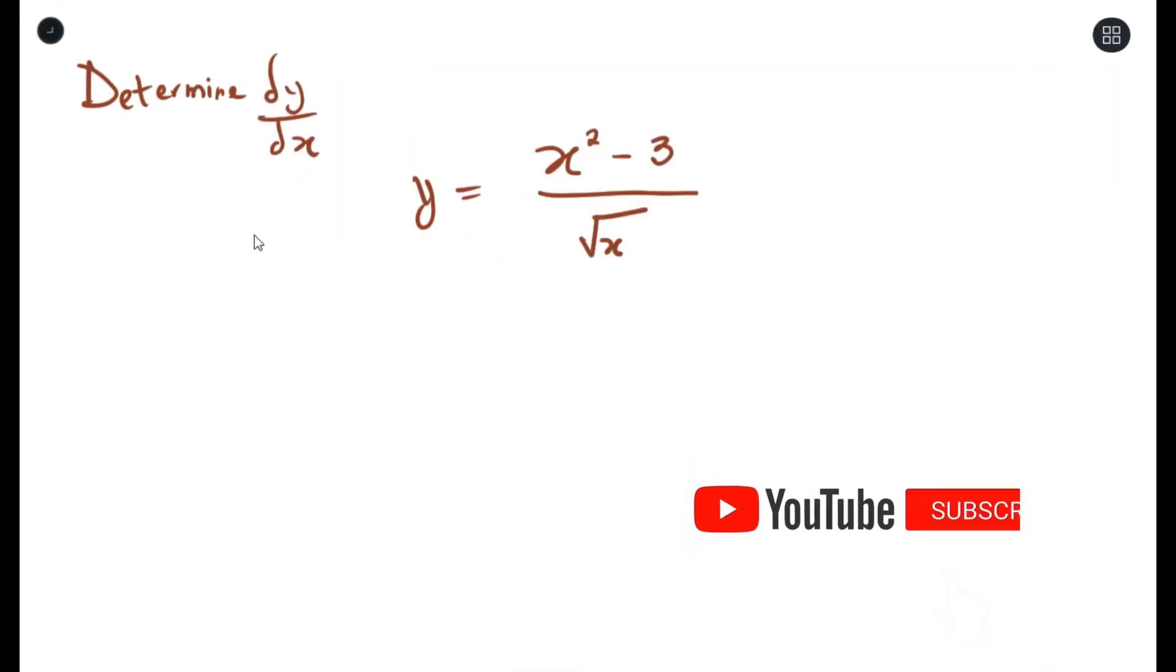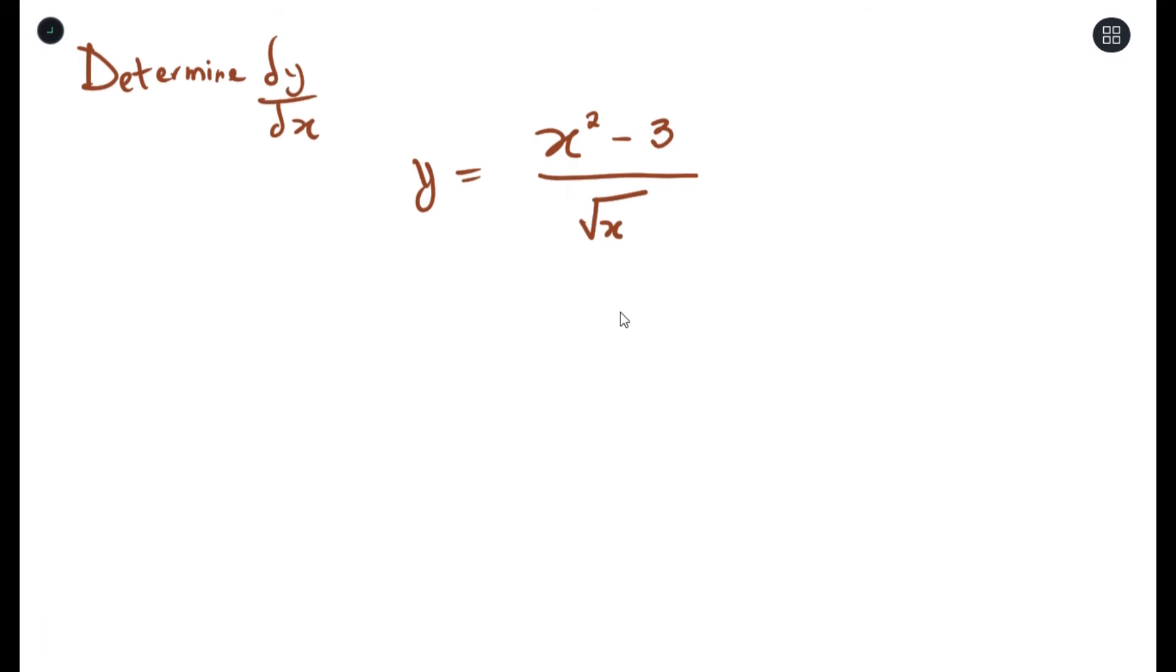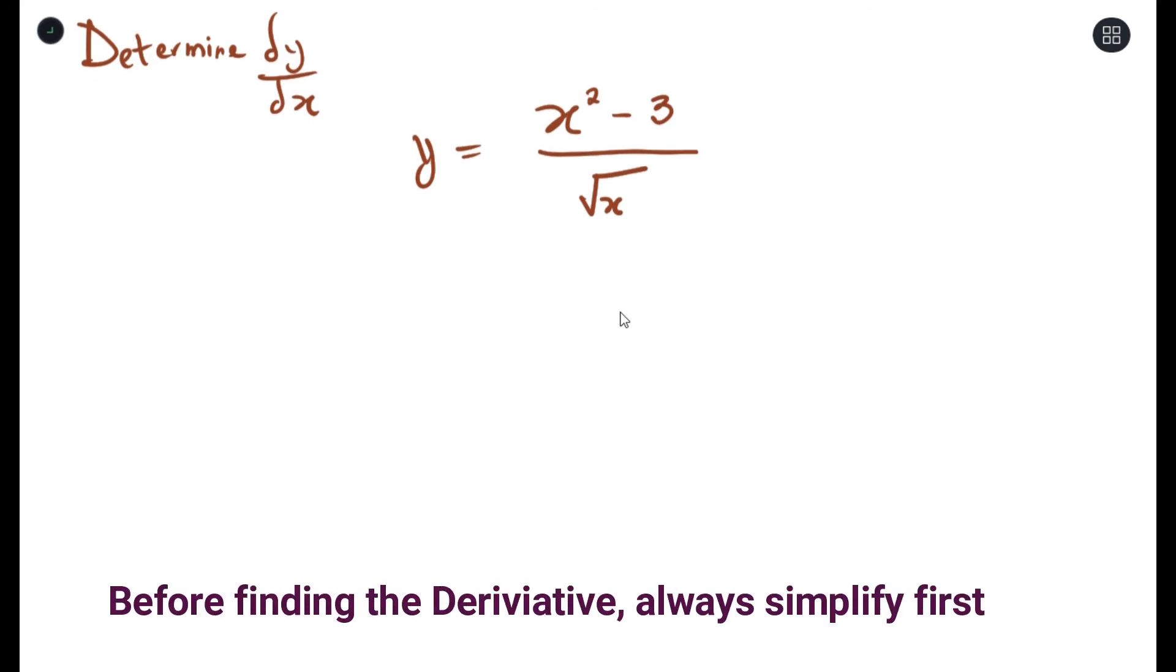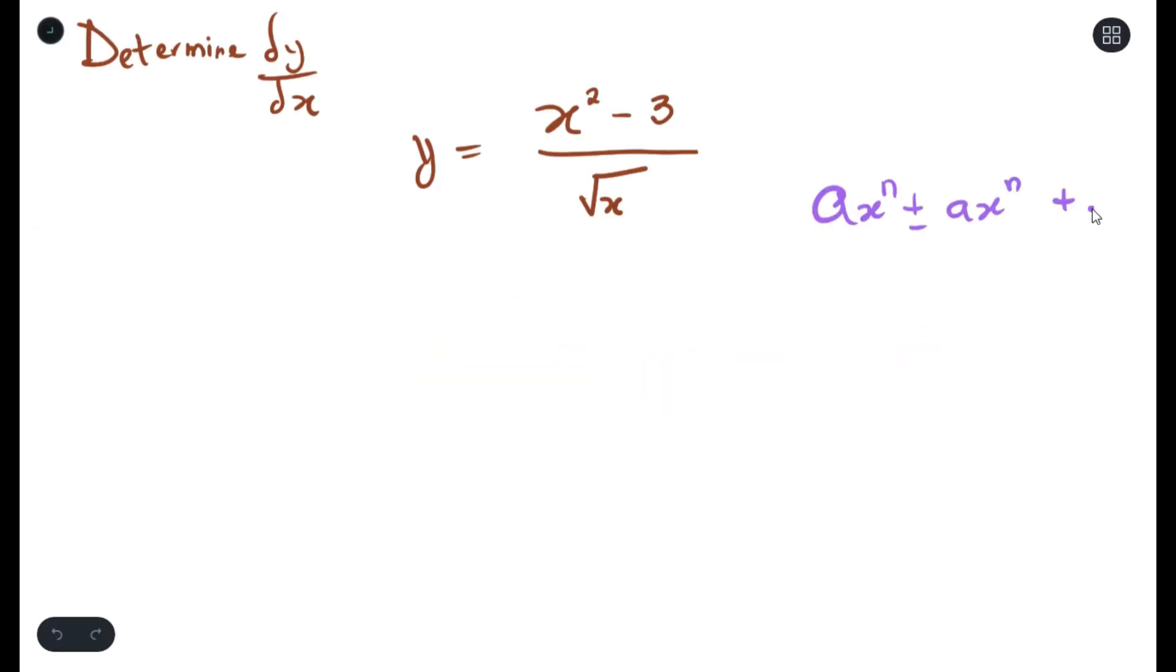This question asks us to find dy/dx, meaning we want to find the derivative of this equation which is (x squared minus 3) over the square root of x. Now the first thing we will do is to simplify this. Before we can do any derivative, we need to simplify this as best as possible. We need it to look something like this so we can easily apply the rules of differentiation.